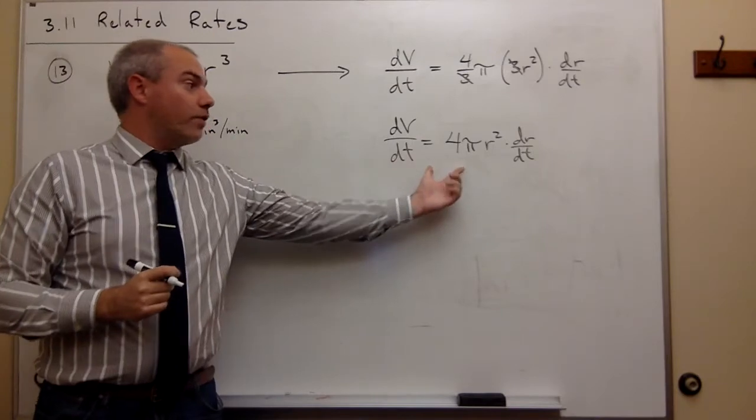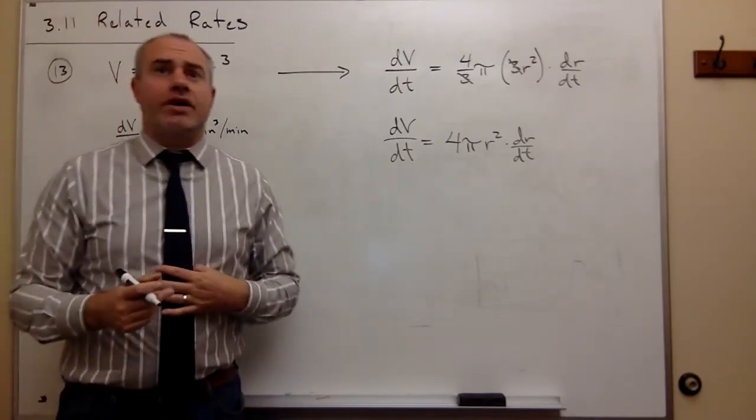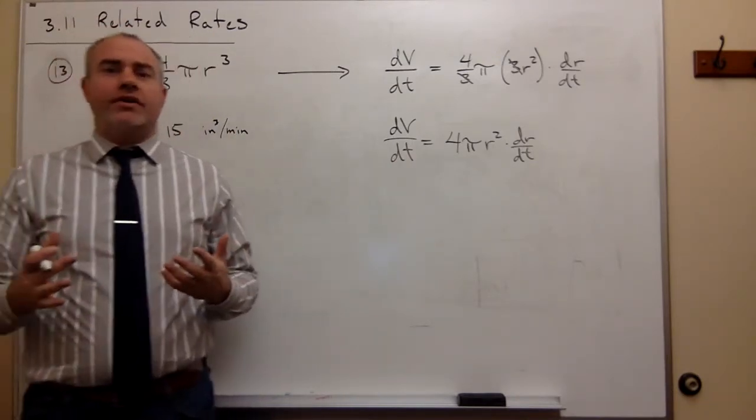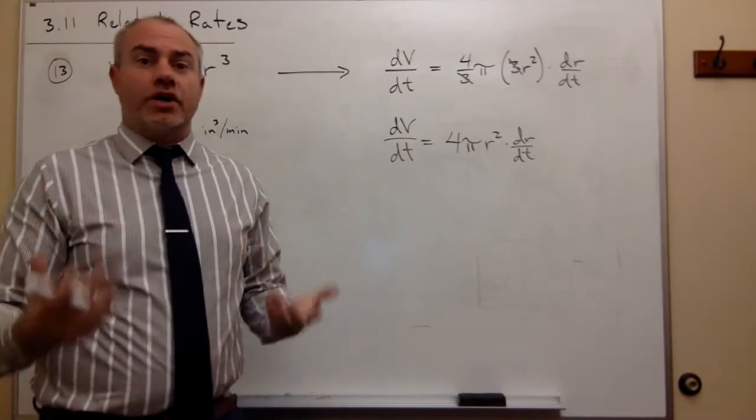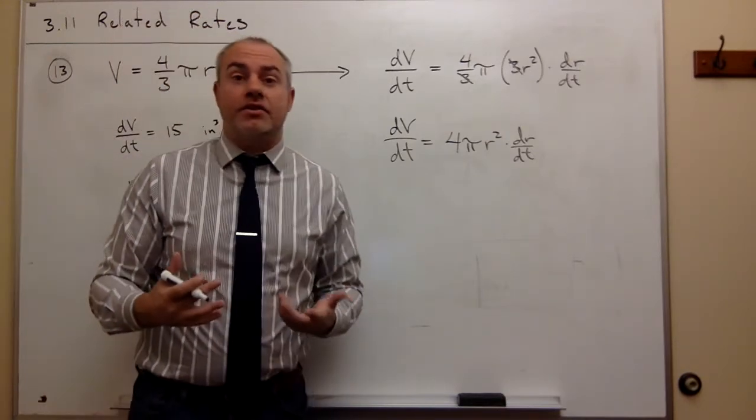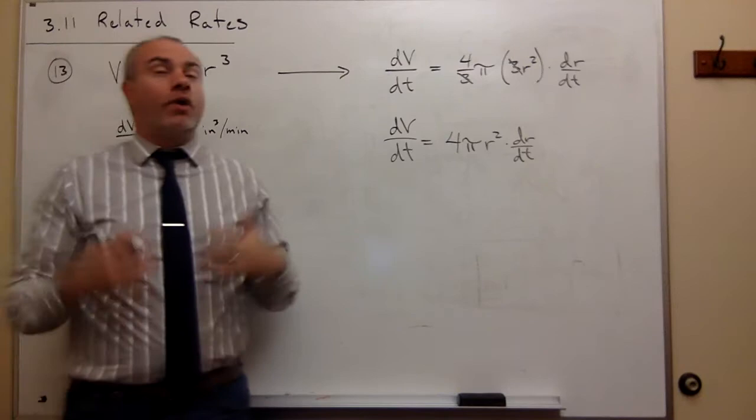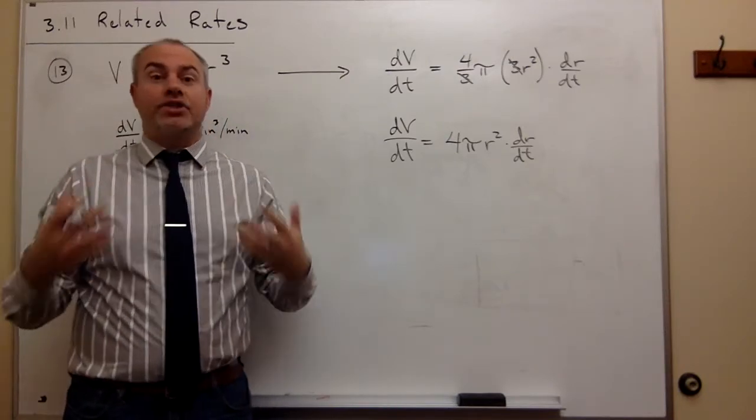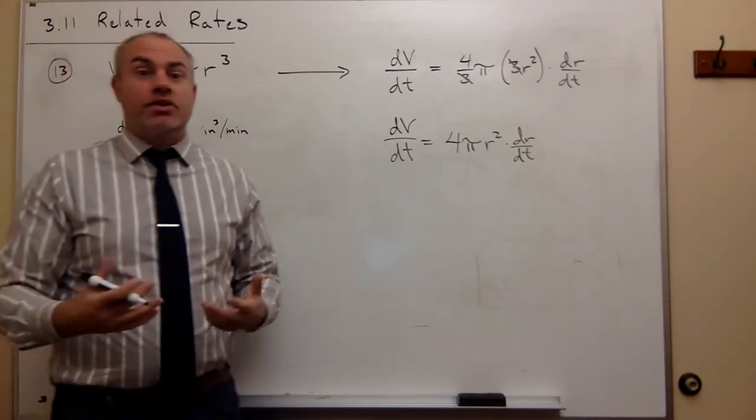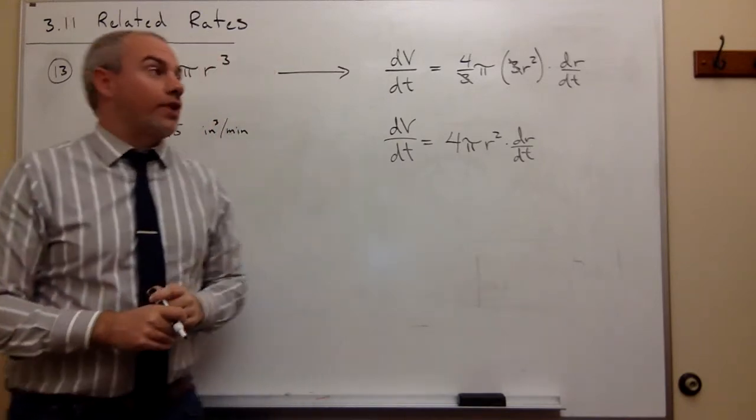All right, so here's our equation, and now we need to ask the question: what is it we're trying to find out here? What is it we're trying to solve for? The answer is, I'm trying to find the rate of change of the radius.